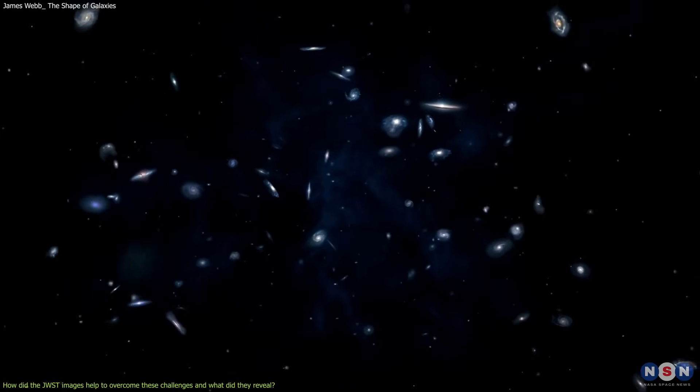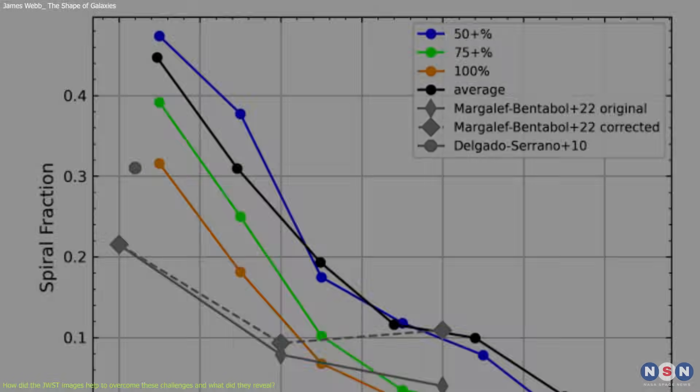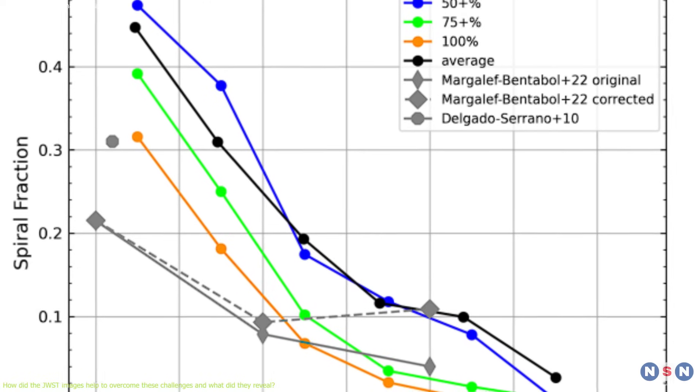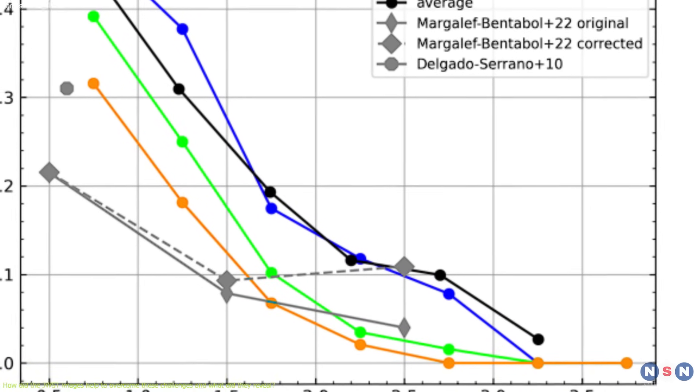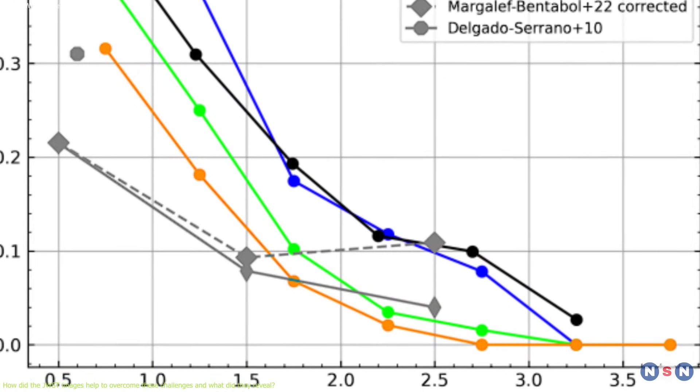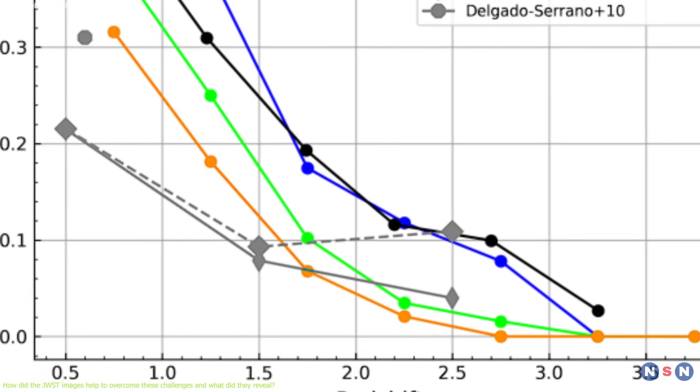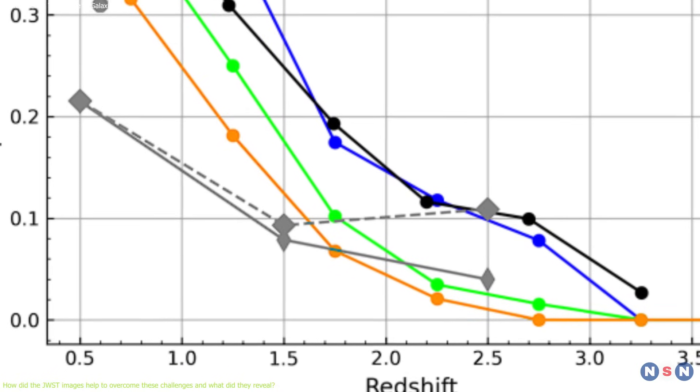The study found that the fraction of spiral galaxies decreased with increasing redshift. The fraction of spiral galaxies was about 48% at z equals 0.75, 28% at z equals 1.5, 15% at z equals 2.25, and 8% at z equals 2.75.